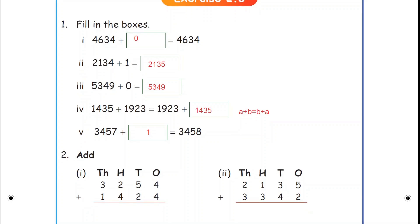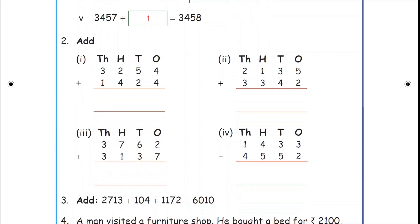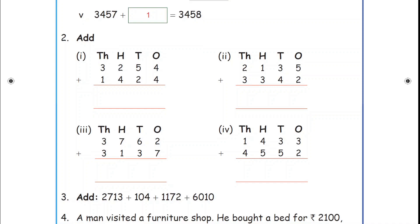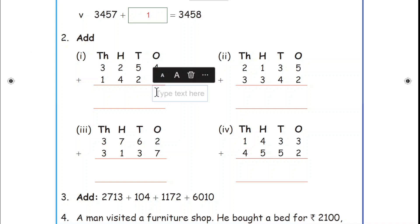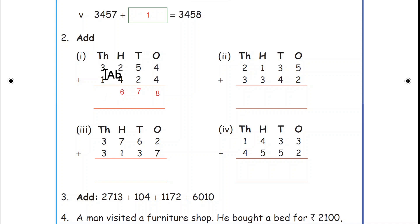Now go to the second section: Add. First sum — four digits are given: ones, tens, hundreds, thousands. First, take the ones place value: 4 plus 4 = 8. Next, move to the tens place: 5 plus 2 = 7. Next, hundreds place: 2 plus 4 = 6. Next, thousands place: 3 plus 1 = 4.